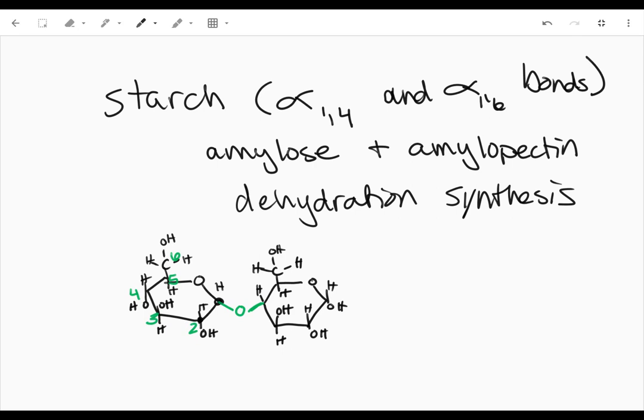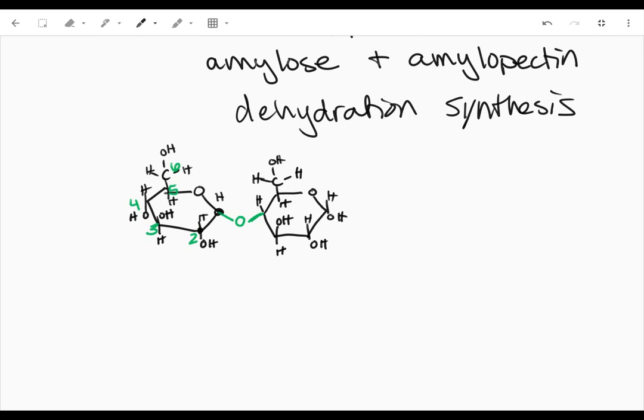All right, so now I'm just going to draw an alpha 1-6 bond next. So we need those hydroxyl groups lined up. So there's that hydroxyl group, and it's going to be bonded to my carbon 6, so the rest of my molecule is down here. All my hydroxyl groups go in, my hydrogens.